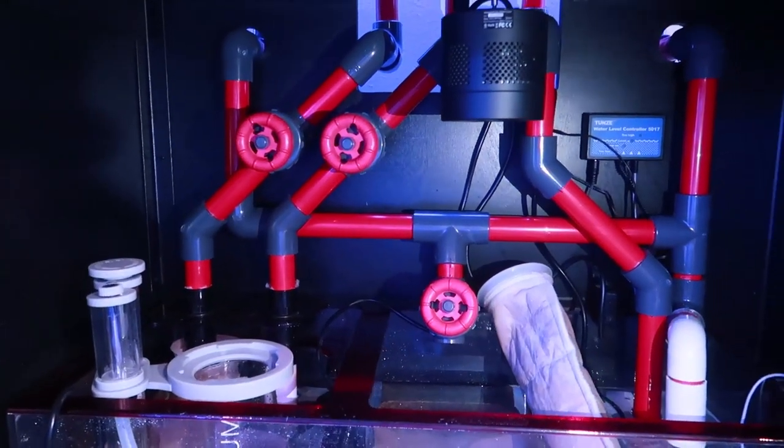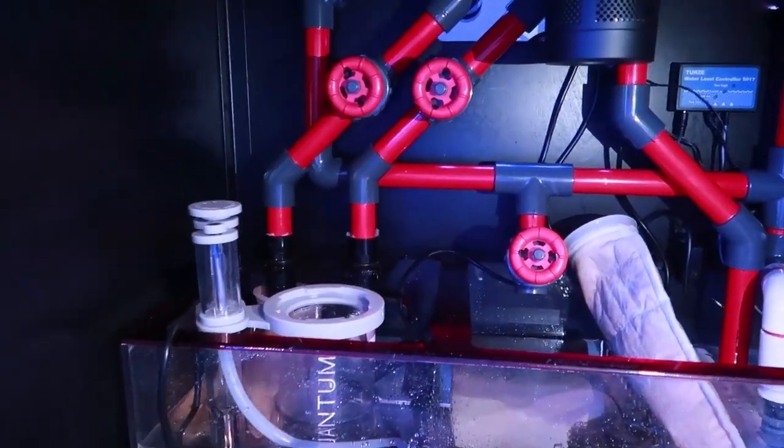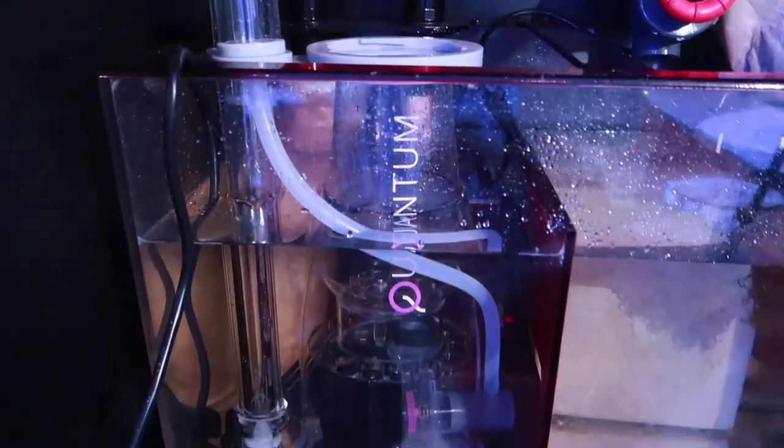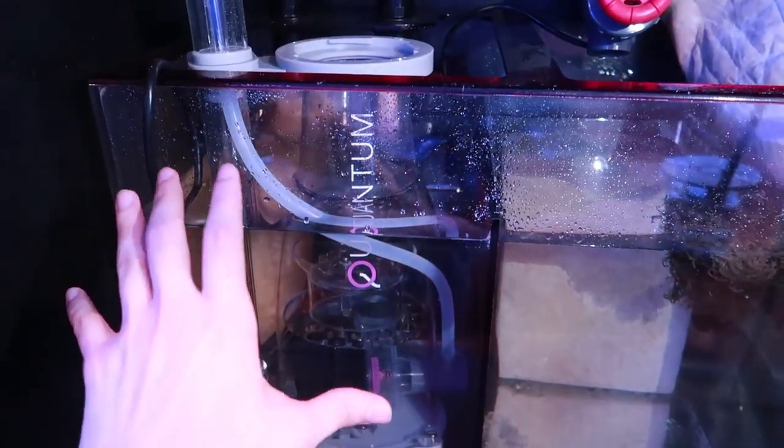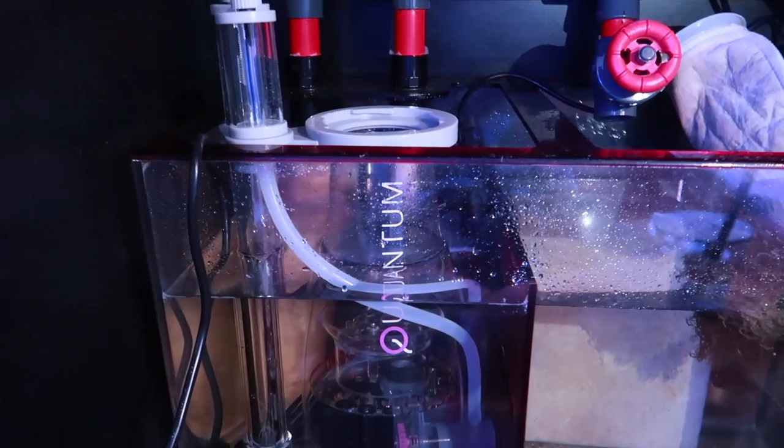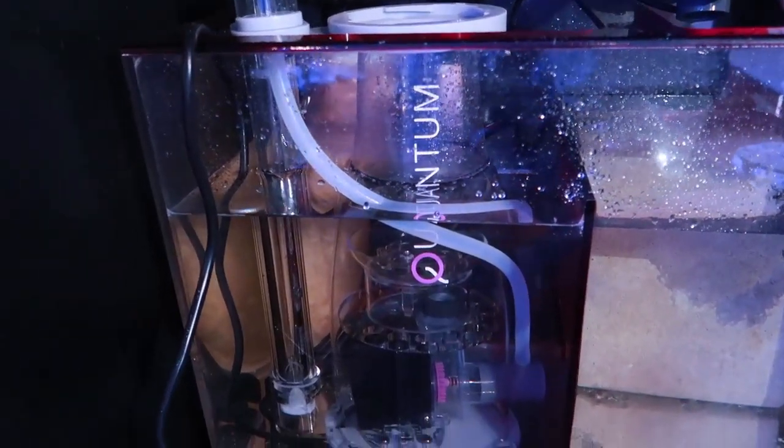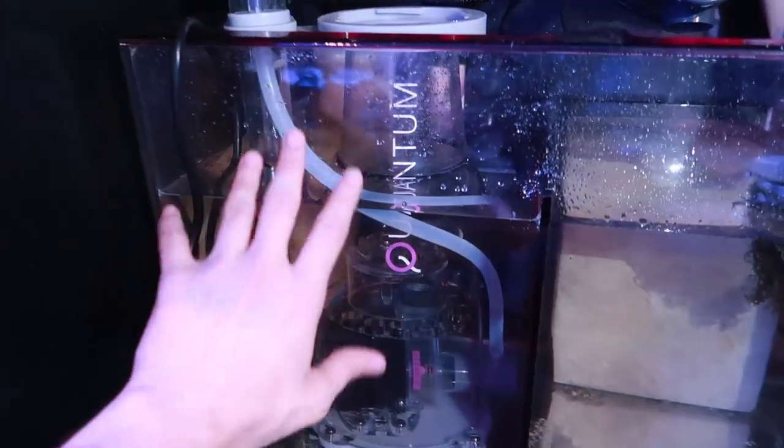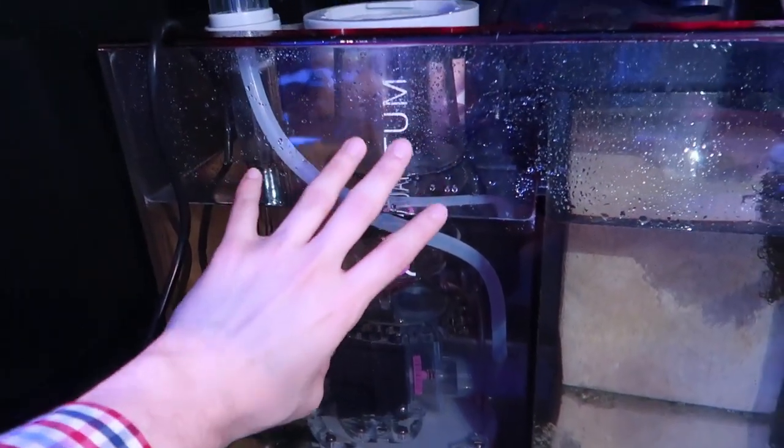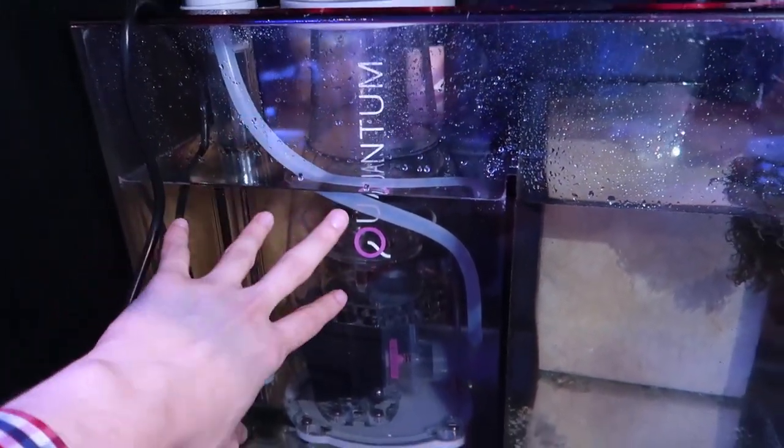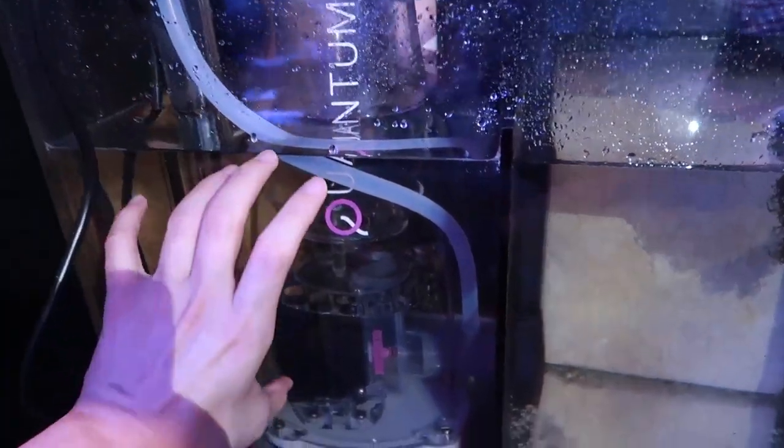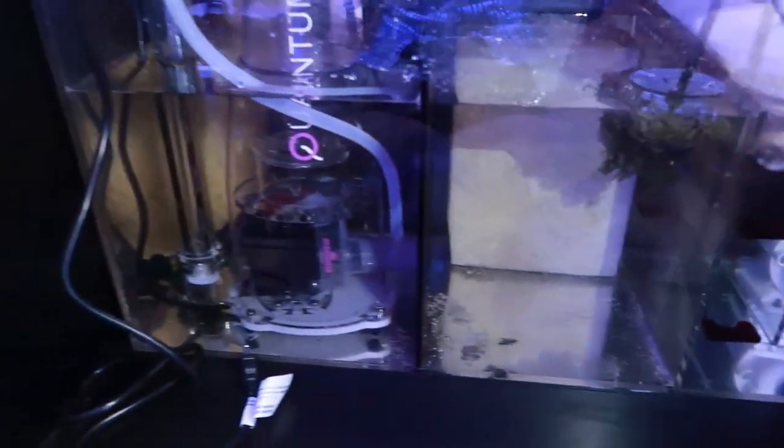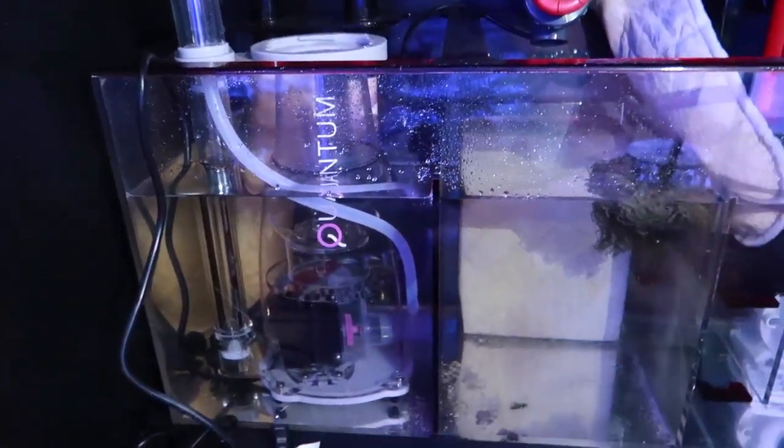First things first, let's talk about the mechanical filtration in the sump for the 90 gallon clown harem build. Right now we are looking at a Nyos quantum 160. This skimmer is rated at I believe 250 gallons max. I have not broken this unit in, and that's kind of what I want to talk about today. I do have a crate just like I put underneath my return pump ready to go just in case I need to adjust and level it.